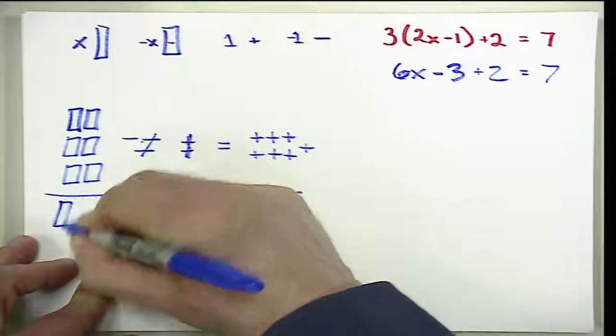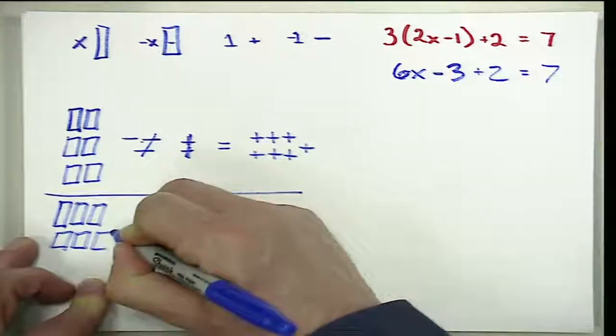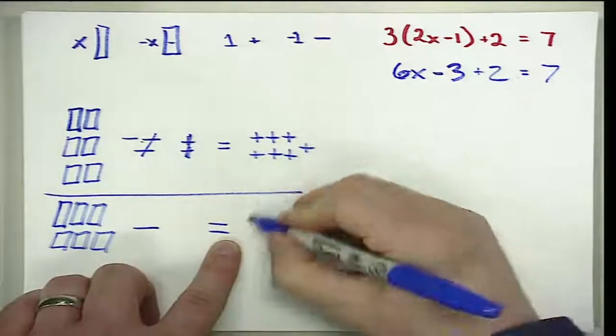So when we redraw, we are going to have one, two, three, four, five, six X's and the negative one, and that is going to be equal to seven positives, or positive 7.